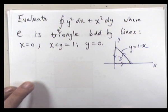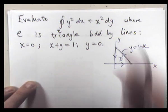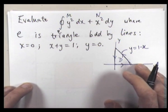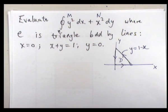Okay, so M is y squared, N is going to be x squared. We want to calculate the partials.